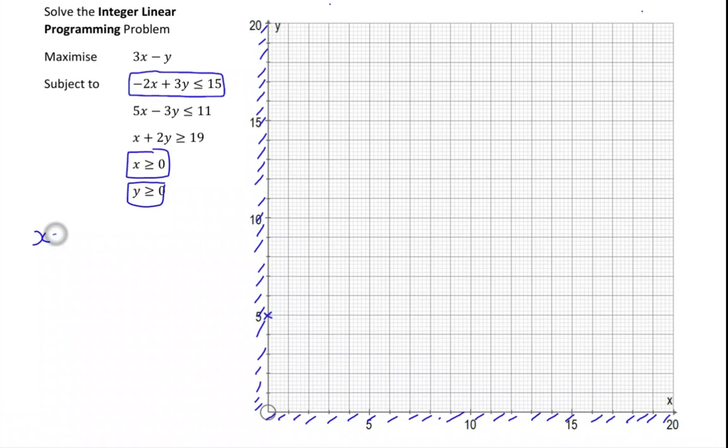If x is 10 then I'm going to have minus 20 plus 3y is equal to 15. So 3y is equal to 35, so y is going to be 35 over 3. I haven't chosen a particularly good value here because 35 over 3 is going to be difficult for me to plot. So let's try another value.